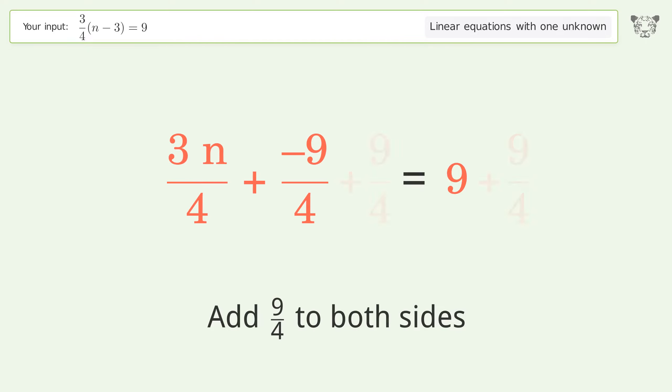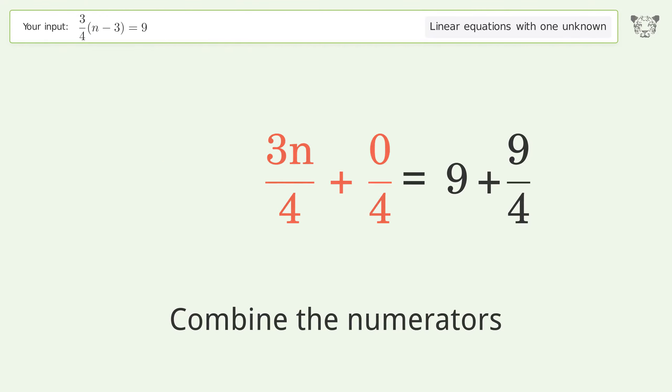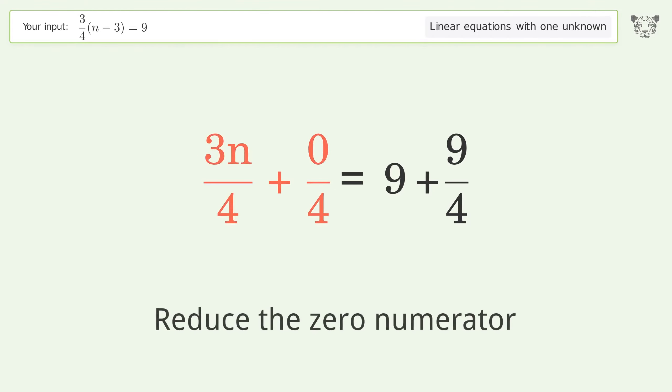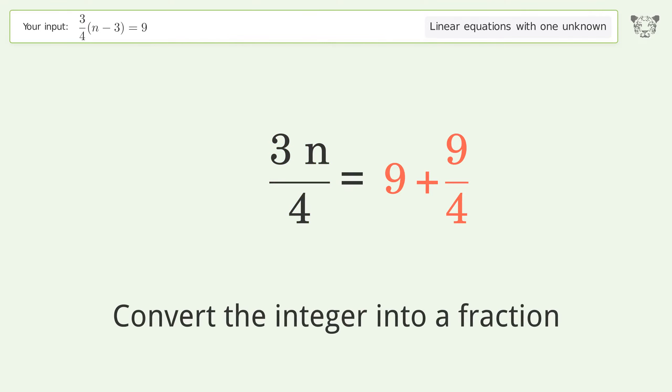Combine the fractions by combining the numerators. Reduce the zero numerator, simplify the arithmetic, and convert the integer into a fraction. Combine the fractions again and combine the numerators.